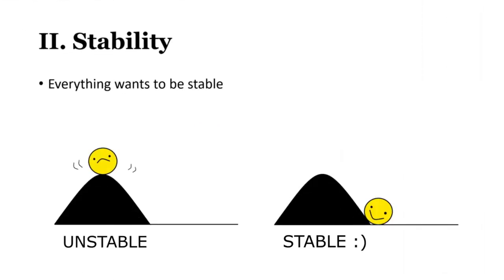Second, there is stability. Everything in the universe wants to be stable, and stability comes from having as less energy as possible. Third, there is the vacuum state. A vacuum state is the lowest level of energy and has maximum stability.